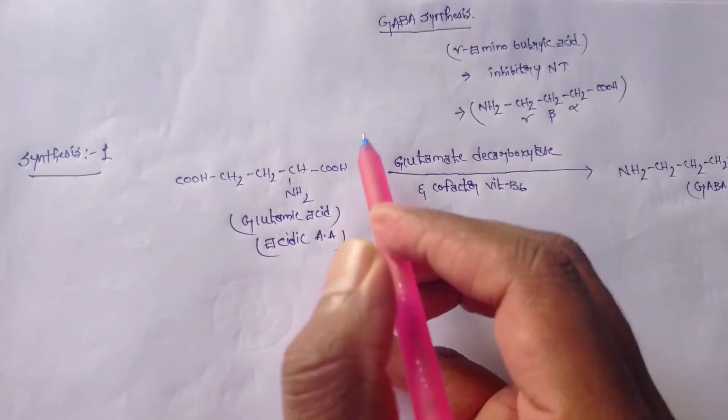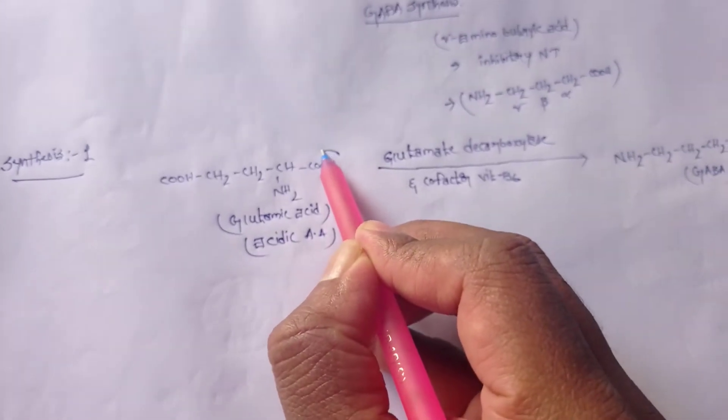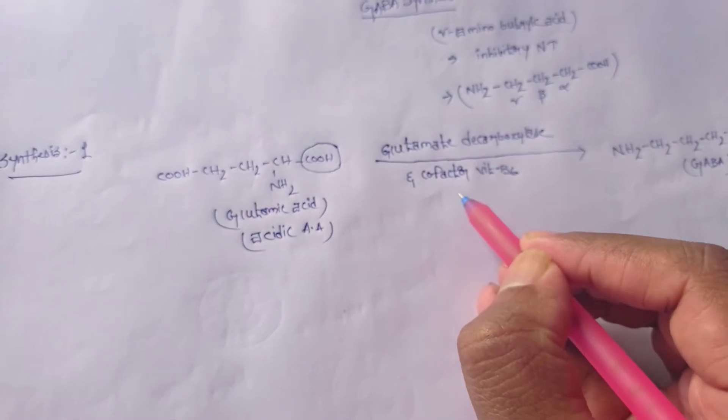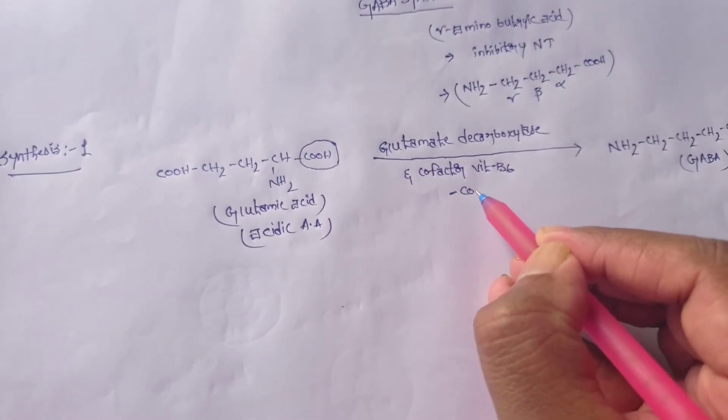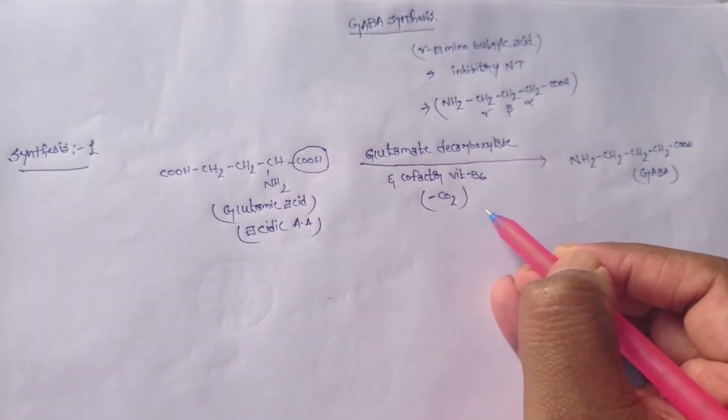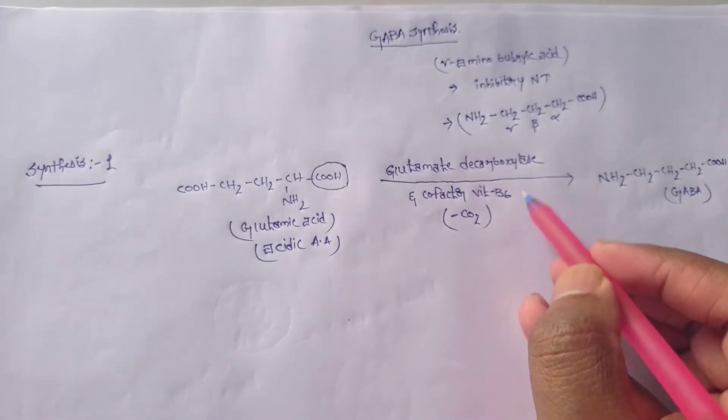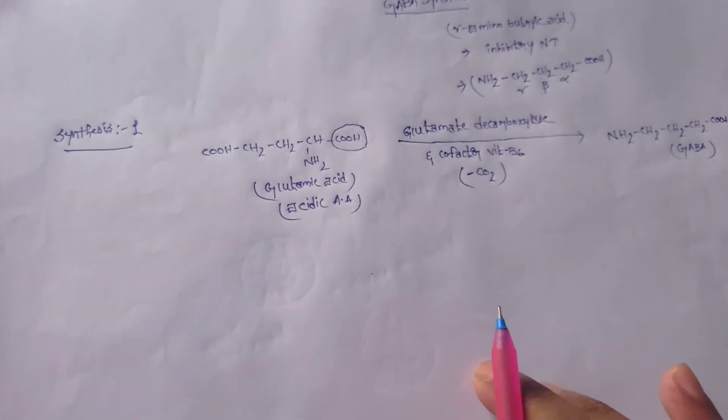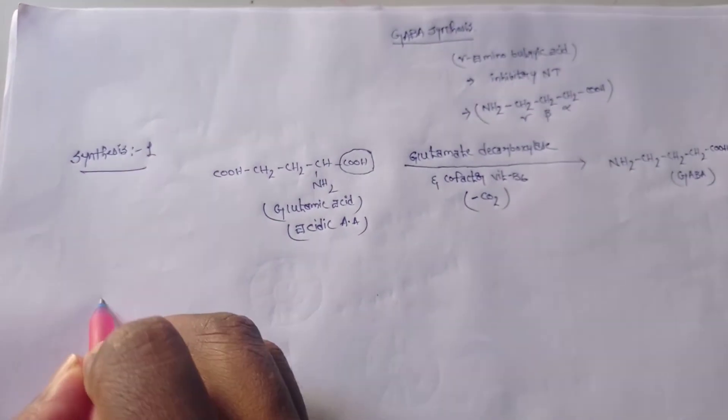During this process, glutamic acid having the carboxylic group - one of the carboxylic groups is converted to carbon dioxide as removal. So it's a decarboxylation process; carbon dioxide is removed. Coming to synthesis two.